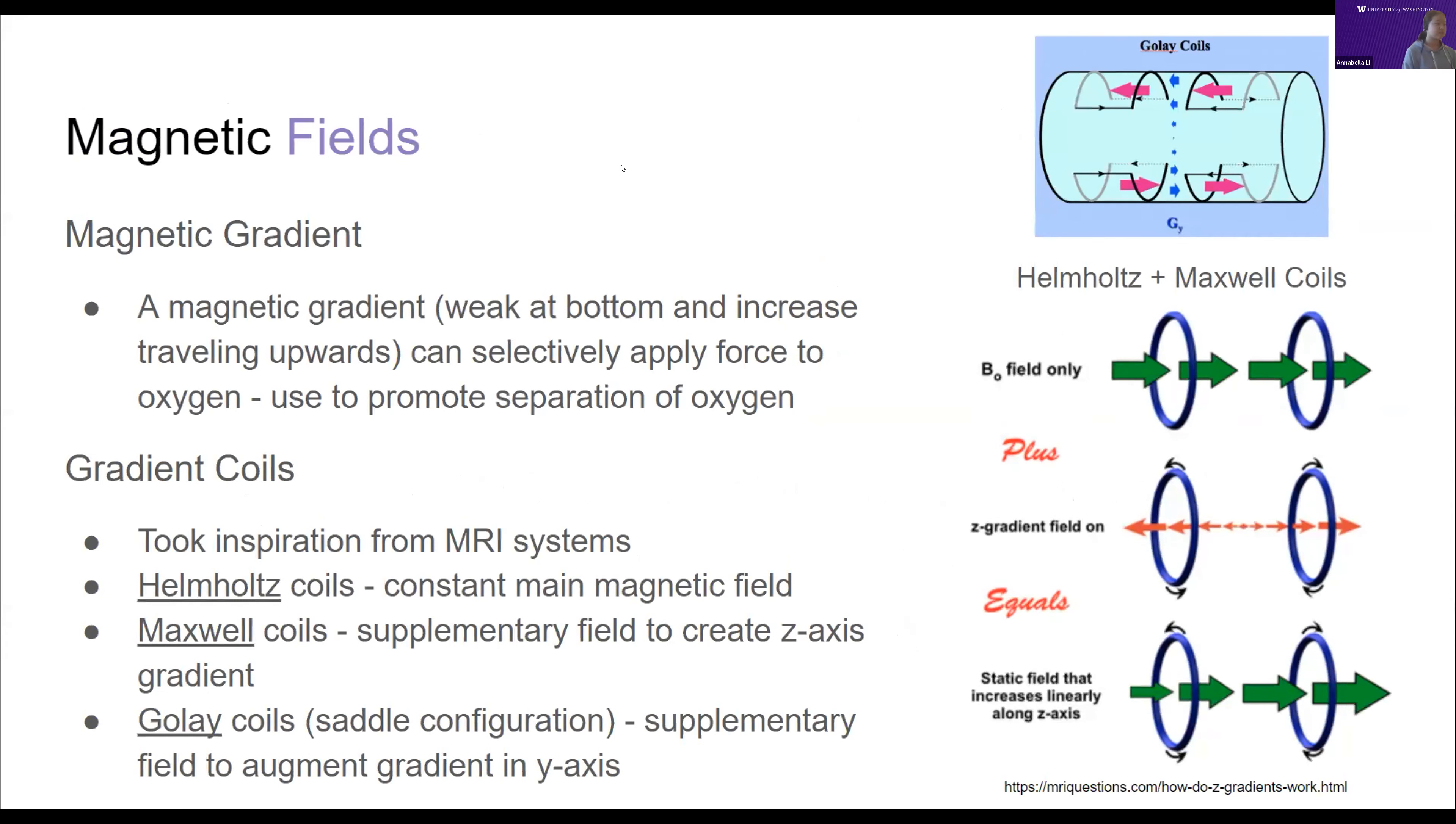Once we confirmed that the ratio was big enough for us to continue pursuing this route, we encountered the challenge of how to practically implement this magnetic field. We had the idea of using a magnetic gradient, a weak magnetic field at the bottom chamber that increases as you travel to the upper chamber. The oxygen being paramagnetic will follow this gradient from the bottom chamber and be pulled upward into the upper chamber, increasing the concentration of oxygen there.